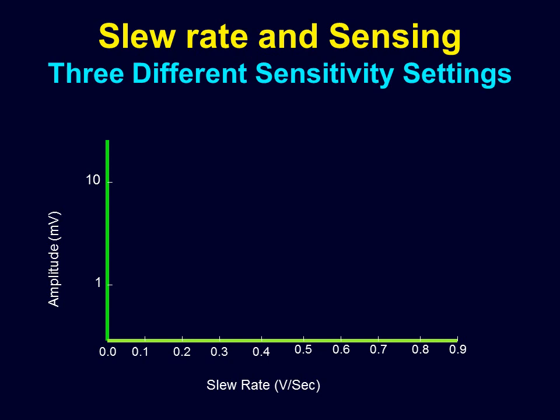Many newer pacemakers, particularly for atrial deflections, have very small slew rates so they can pick up small waves. But for example, if you program a slew rate of 0.5 in an atrial electrogram which is only 1.25 millivolts, and the amplifier is only capable of sensing at 0.4, it might not see the wave and may pace the patient when there is an actual atrial electrogram. That's why you may require smaller slew rates to see what exactly the wave is.